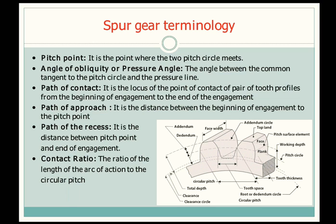Next is path of contact. It is the locus of the point of contact of a pair of tooth profiles from the beginning of engagement to the end of engagement. When two gears are mating, the path of contact is the locus of that distance — from the point where the two gears first meet, up to the point where they move away from each other.